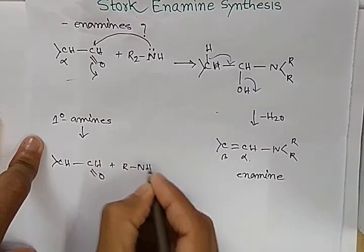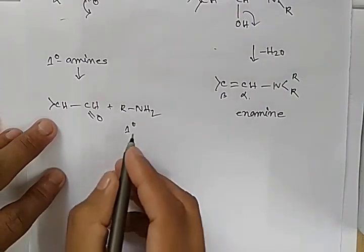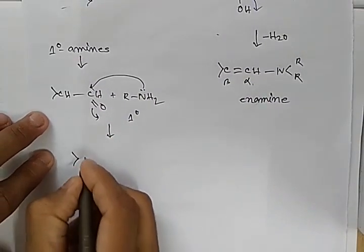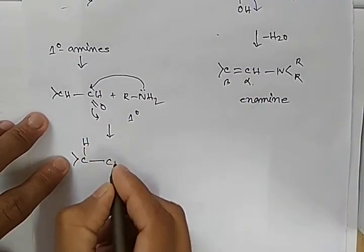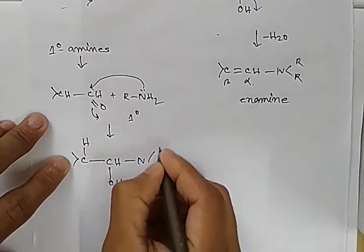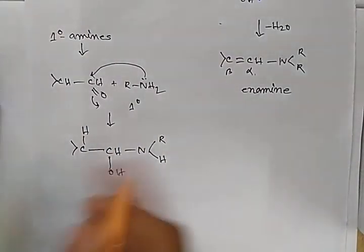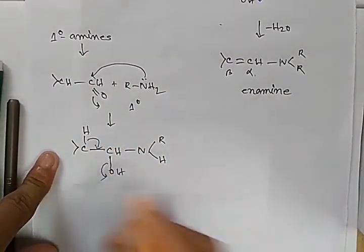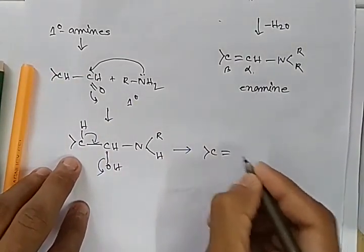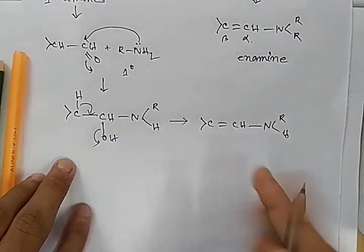When an aldehyde is treated with a primary amine, after attacking, we get a system with an NRH group. After removing the water molecule, it forms an alpha-beta unsaturated amine — that is also an enamine.